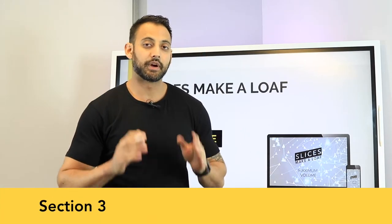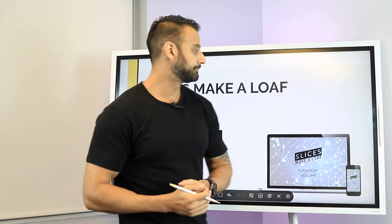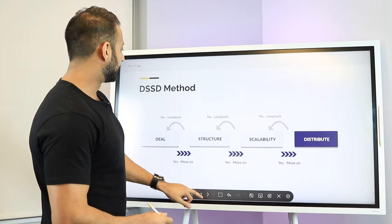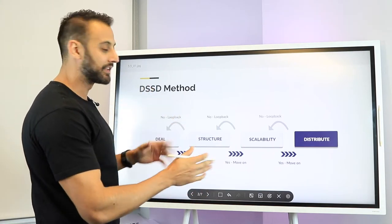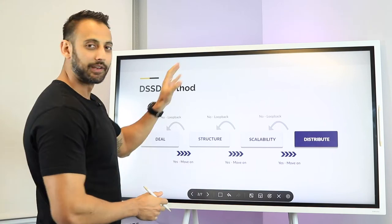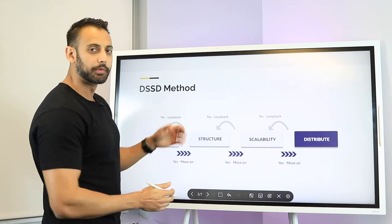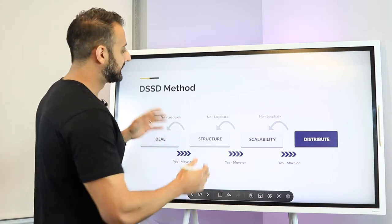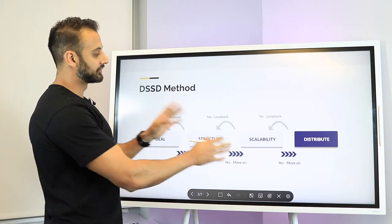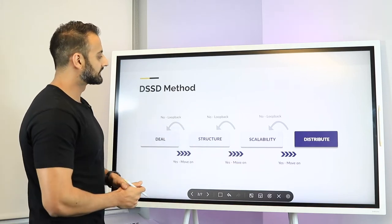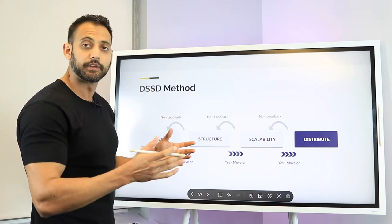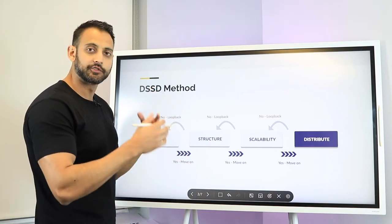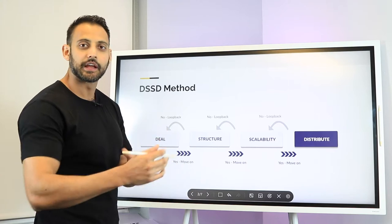In this video we're going to break down what DSSD, the method, the formula that I've been talking about. This is a way better depiction of that formula and method than what I was doing before. This is really the process of how to apply this formula to the problem you have, which is creating and choosing the right business and then having it distributed.